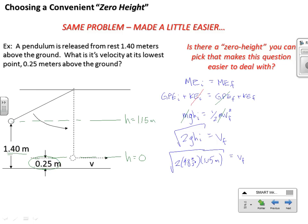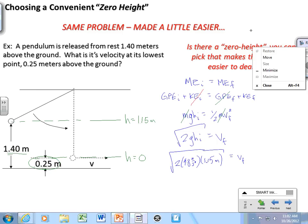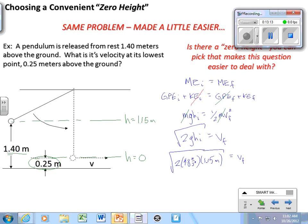It doesn't matter if you choose the convenient zero height or not, as long as you're careful you'll get the right answer. But this can make things a little bit more convenient. What I'm going to do is also attach some straightforward conservation of energy problems that deal with changes in height and changes in speed. How do you know when to use this solution? I say anytime you're trading speed for height.